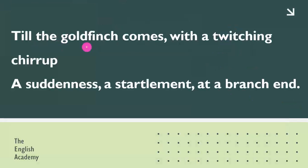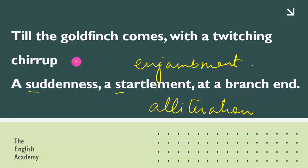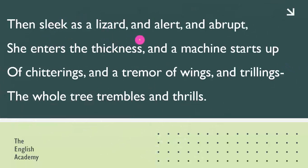Moving to the next lines: till the goldfinch comes with a twitching chirp, a suddenness, a startlement at a branch end. Here also there is alliteration — 'suddenness, startlement' both start with the S sound. There is also enjambment — the same sentence continues: 'till the goldfinch comes with a twitching chirp, a suddenness, a startlement at a branch end' with no punctuation at the end. In line 1 there is assonance — prominence of the I sound: till, goldfinch, twitching. In the second line there is assonance of the A sound: a startlement, a suddenness, a branch end.